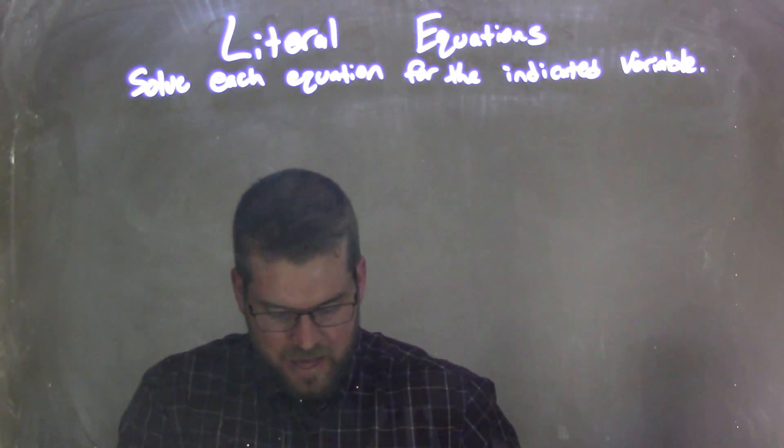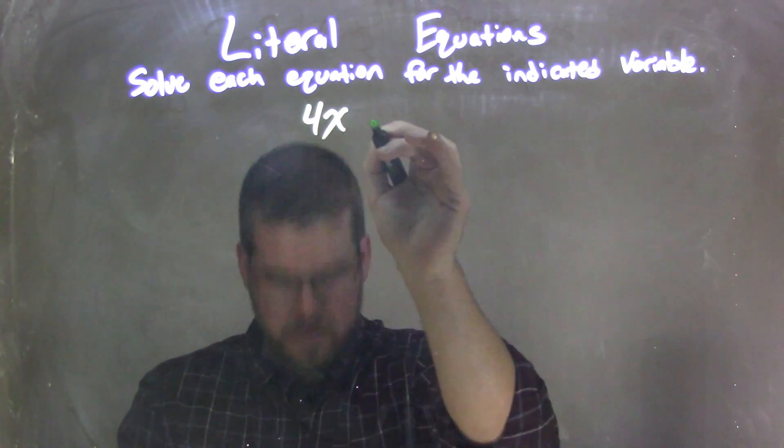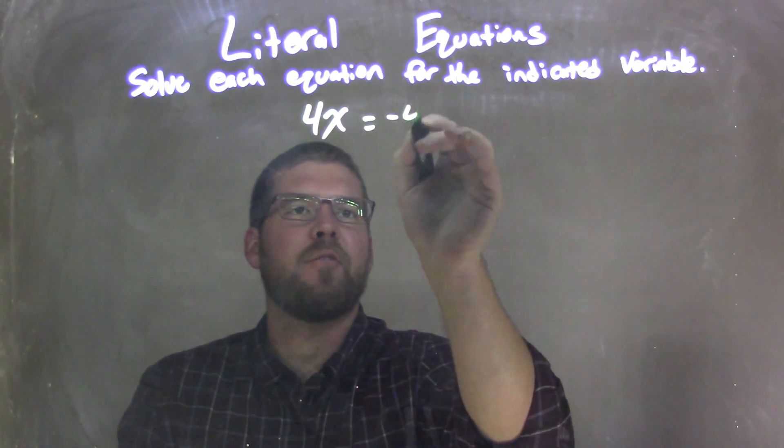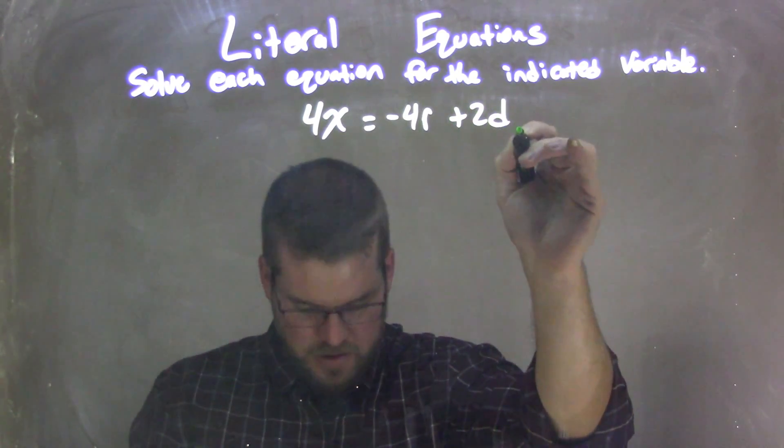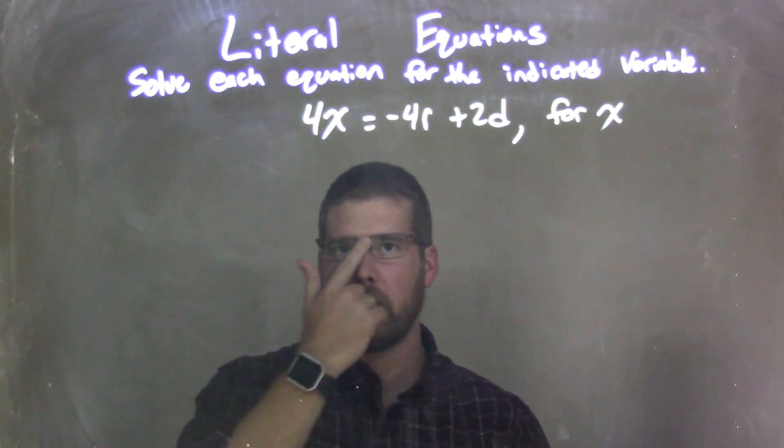If I was given this equation, 4x equals negative 4r plus 2d, I'm going to solve that for x.